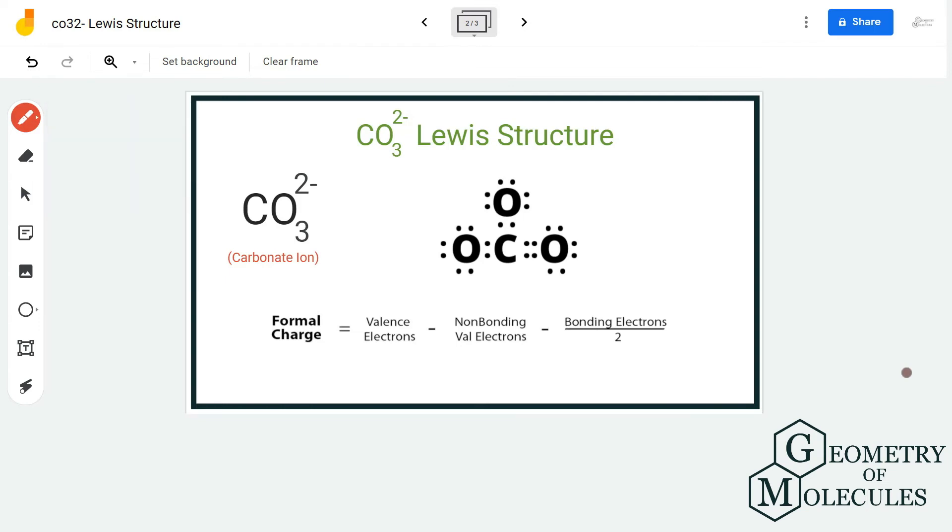Whereas when we come to the oxygen atoms over here, this one has minus one charge and even this one has a minus one charge. But when we look at the oxygen atom over here forming a double bond, it has a charge of zero. So in total we have minus two charges, which makes sense because there is a minus two charge on this molecule.